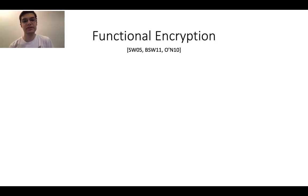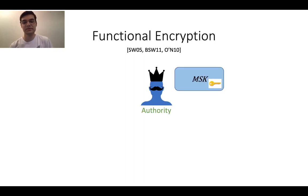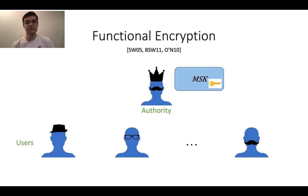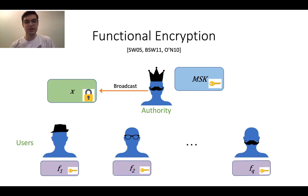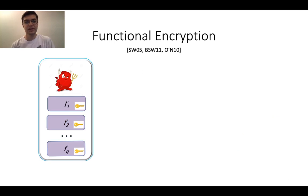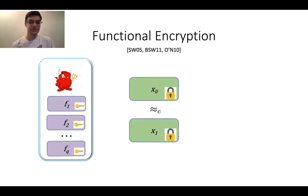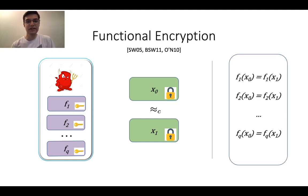In this work, we study cryptographic combiners for functional encryption. In functional encryption, there's a trusted authority that holds the master secret key. The authority can generate function keys for various functions and give them to users. Users in possession of function keys, given an encryption of some message x, can learn the function evaluated on the message. The security notion says that an adversary possessing various function keys is not able to distinguish encryptions of two different messages, provided the functions evaluate to the same thing on both messages — essentially, the adversary can't learn anything beyond what the function evaluations reveal.